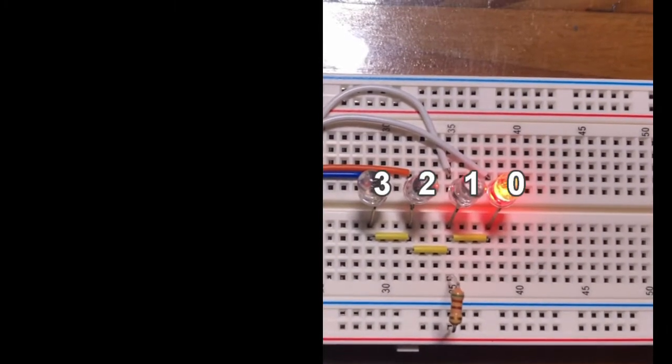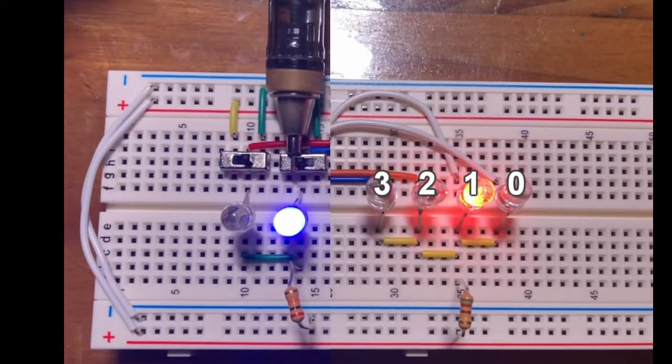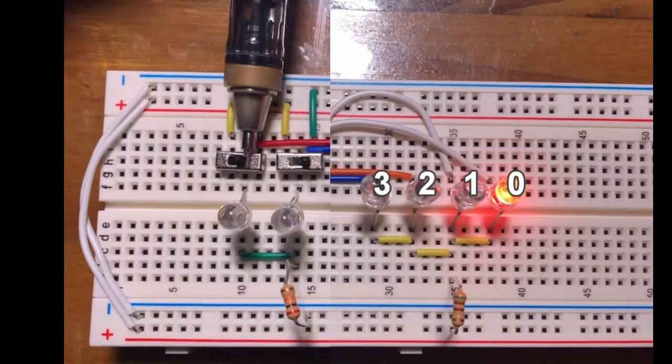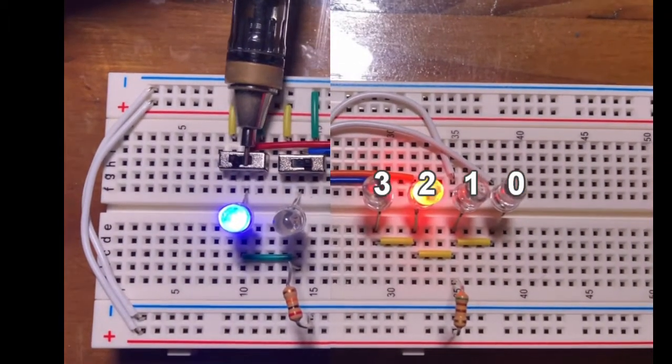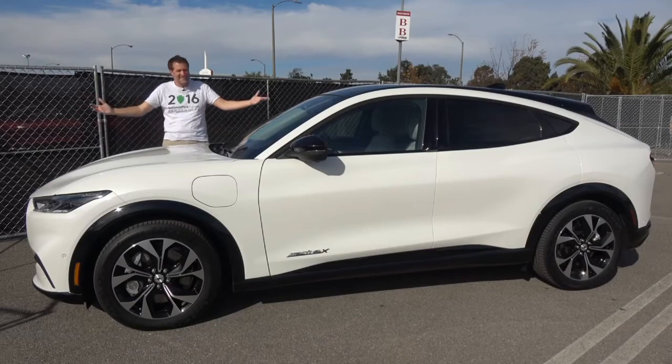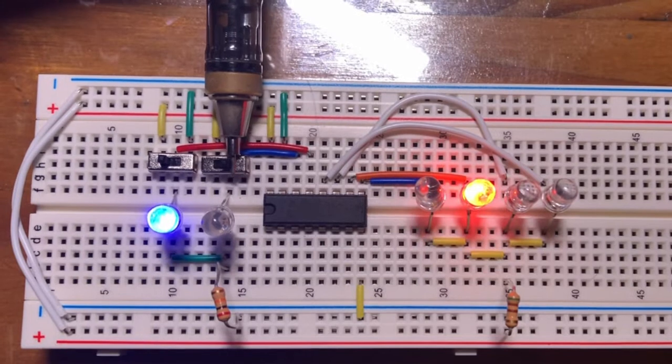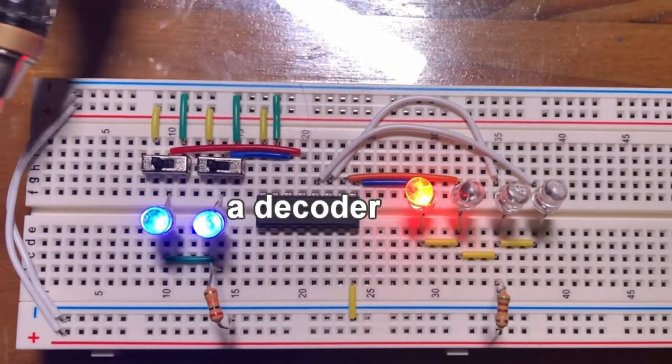If we were to numerically label each wire in one of these groups starting from zero, we can have something that takes in a binary number and turns on the input corresponding to that wire. This allows us to use N wires to represent 2 to the N inputs. This is a decoder, you fucking clown! Yeah, that is a thing. And it's called a decoder.